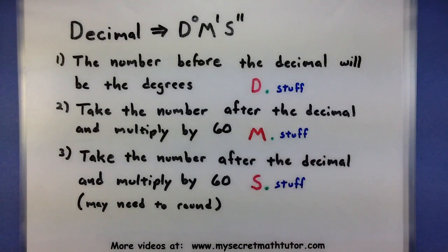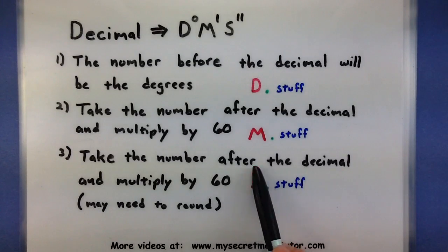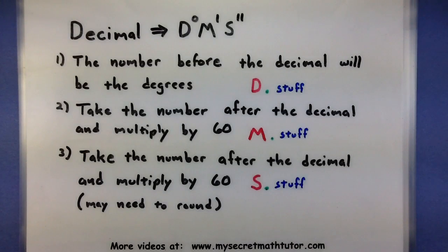Then we'll take the leftover stuff, multiply that by 60, and get a new number, and that will become our seconds. There may be a few things left after the decimal at this point, so we may need to round to get to a nice even second.